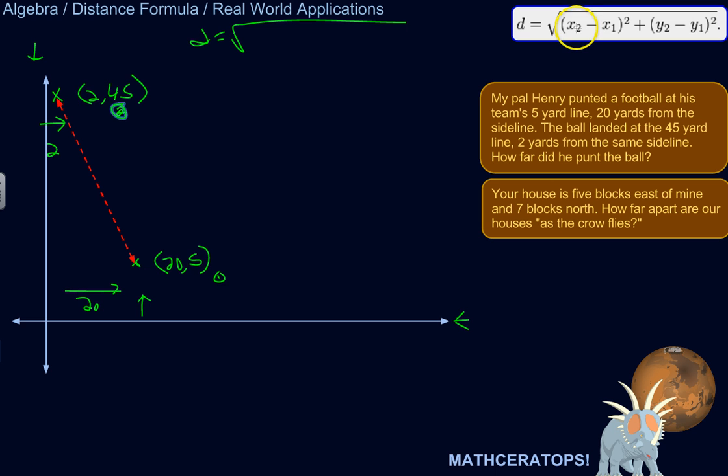So x2 minus x1. So this would be x2 and that would be x1. So x2 minus x1, 2 minus 20, which would be negative 18, squared. Plus y2 minus y1, 45 minus 5, would be 40. And then we square that as well.